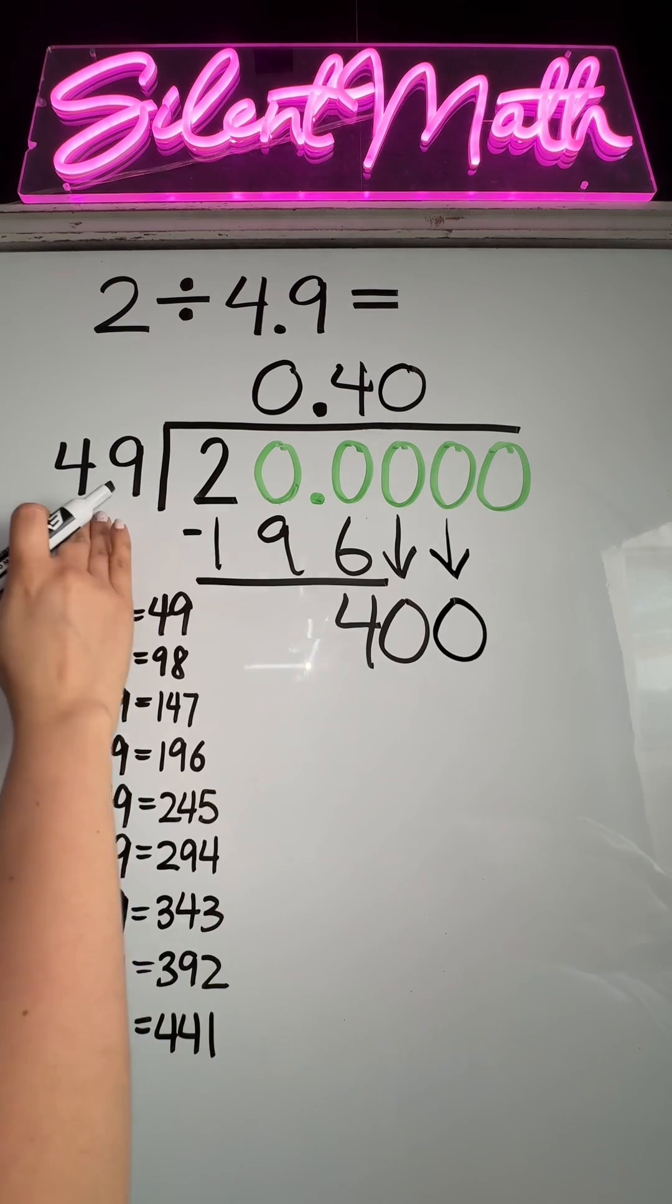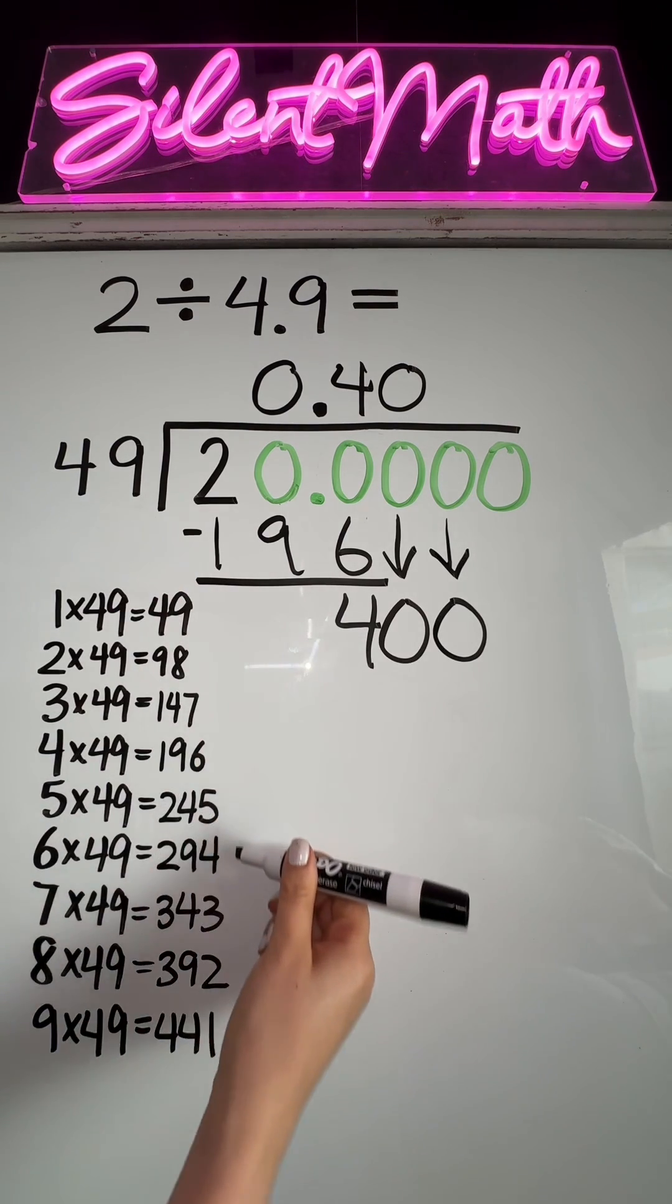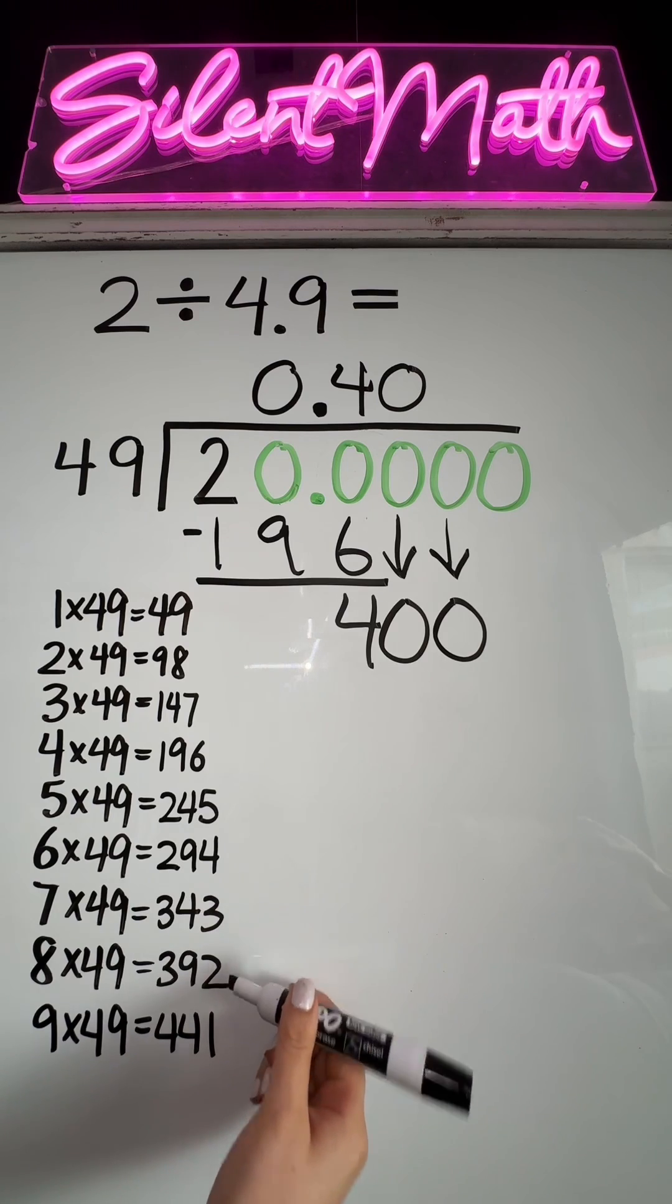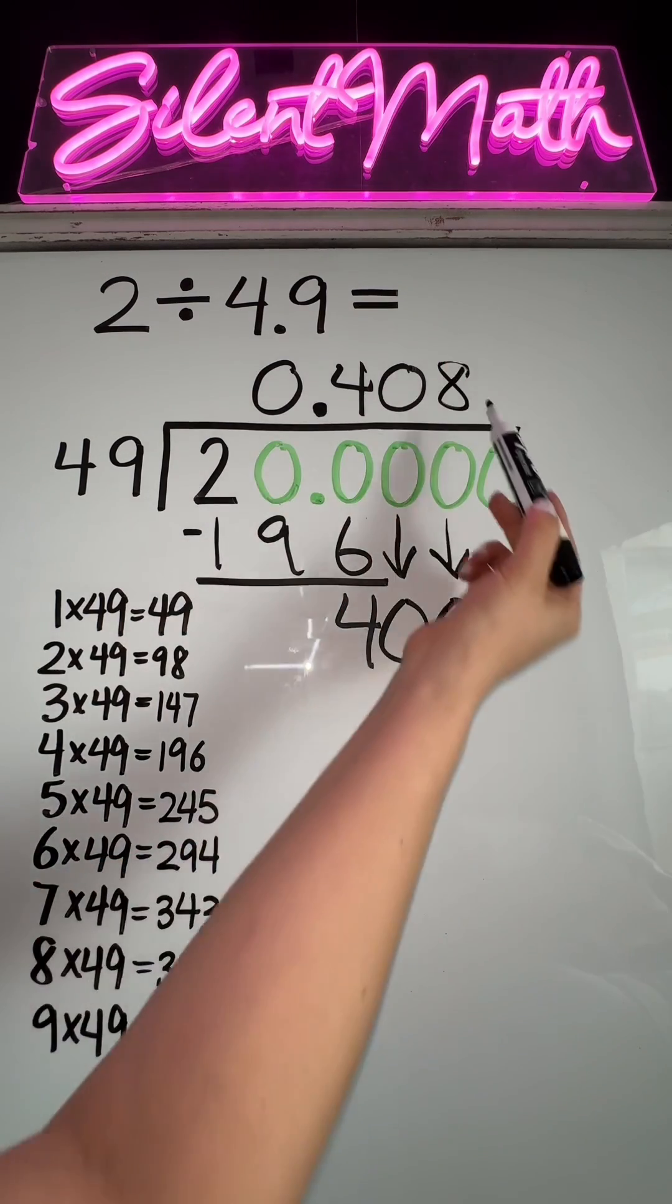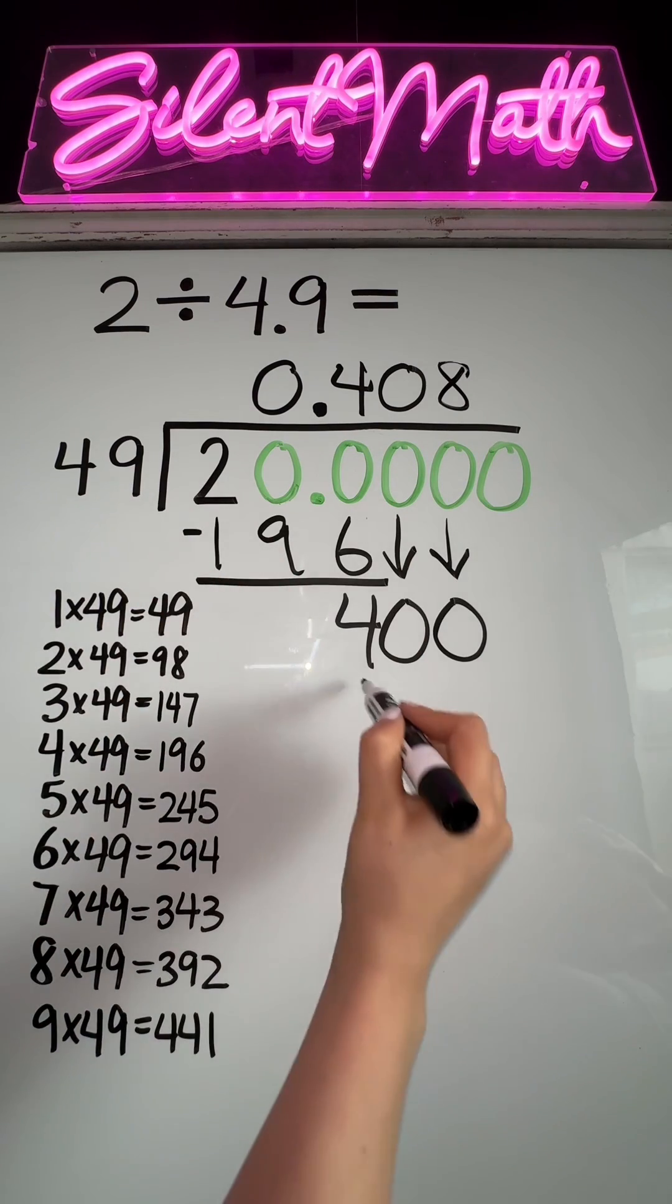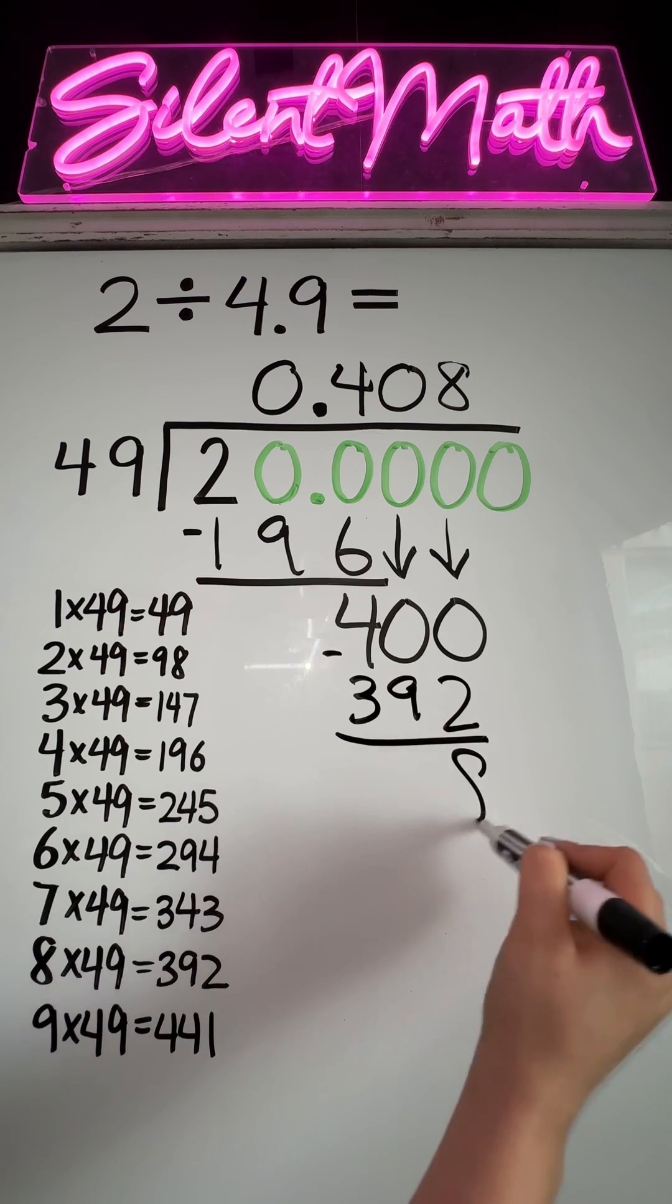Now repeat the process. How many groups of 49 can go into 400? Let's see. This is going to be the closest. This was eight groups, so we're going to put eight groups right here. The product of eight and 49 is 392. We're going to subtract. We get a difference of eight.